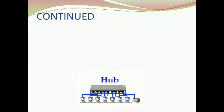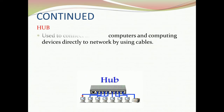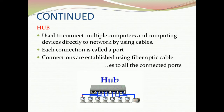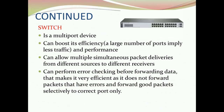The next networking device is hub. It is used to connect multiple computers and computing devices directly to a network by using cables. Each connection is called a port. Hubs cannot filter data, meaning they cannot check the address of the receiver port, so data packets are sent to all connected devices.